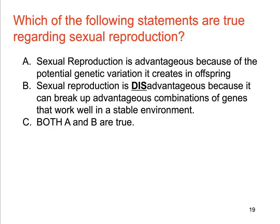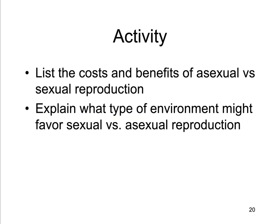You should understand why sex is both disadvantageous and advantageous, and what conditions typically favor sexual versus asexual reproduction. As a follow-up activity to quiz yourself, try to list the costs and benefits of asexual versus sexual reproduction, and explain what type of environment might favor sexual versus asexual reproduction.